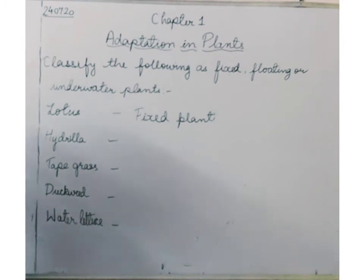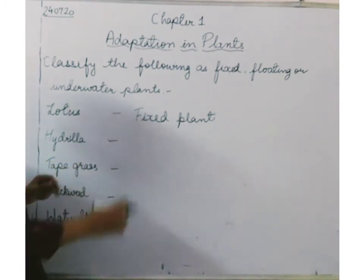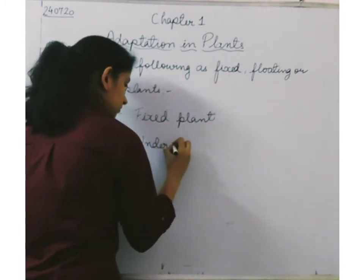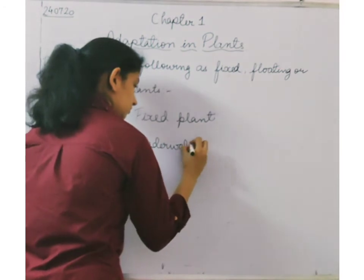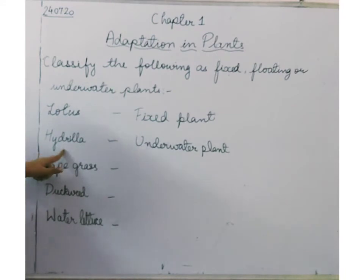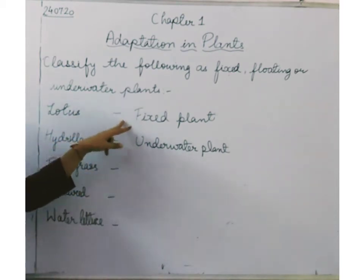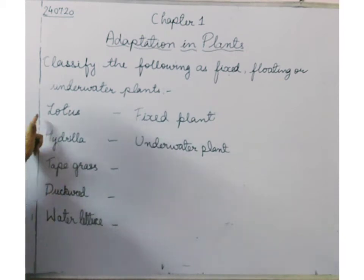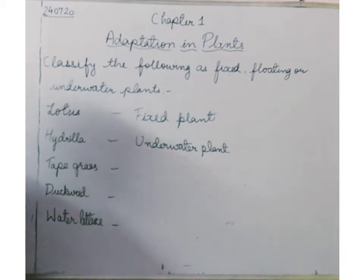Next is hydrilla. Hydrilla — do you remember? Hydrilla is an underwater plant. It remains below the surface of water. Lotus remains fixed, with its roots fixed in the soil of the lake. Tape grass is also again an underwater plant.